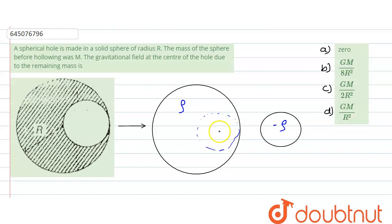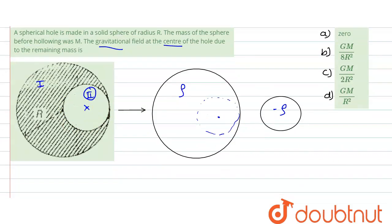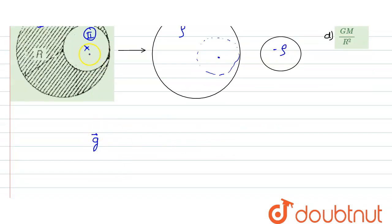Now we need to find the gravitational field at the center of the hole. The gravitational field due to the cavity portion is zero, because the gravitational field at the center of a sphere is zero. So the gravitational field at center C is simply due to the shaded solid portion, which we call region one.